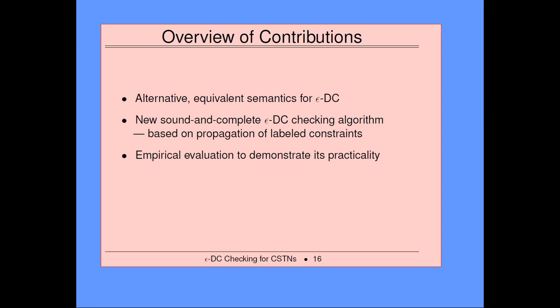They presented an algorithm based on converting a temporal network to an exponential number of other networks using hyper-temporal networks. The sample CSTN we saw is epsilon-DC for epsilon equal to 3. If you can react within time 3, you don't have to worry about that loop because you learn the value of P at time 10, and at time 13 you're able to react — you can execute Y at 15 or 17 as needed. But with epsilon equal to 6, you can't react in time. Our contributions: we get an equivalent semantics useful for proving our theorems, and we give an update of our algorithm that handles epsilon-DC.